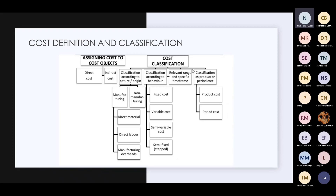I like this slide because it's an overview of what we're dealing with. Is it a direct or indirect cost? Nature-wise, is it under manufacturing or non-manufacturing? If it is manufacturing, is it a direct material, direct labor, or manufacturing overheads? Looking at behavior — is it fixed, variable, semi-variable, or semi-fixed? These definitions might seem familiar, but they catch on in other topics. By the time we get to later topics, you should not be debating whether something is fixed or semi-fixed. Embed these definitions in your head now.